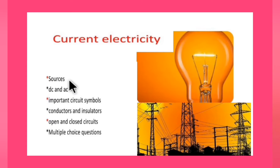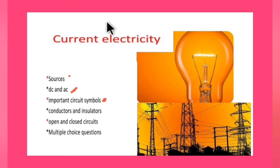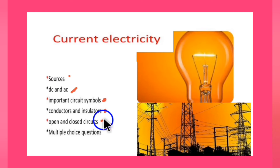In this video we are going to look into a few basic points like sources of electric current, DC and AC — direct current and alternating current — important circuit symbols used in the entire current electricity chapter, conductors and insulators of electric current with examples, open and closed circuits with circuit diagrams, and also a few multiple choice questions.